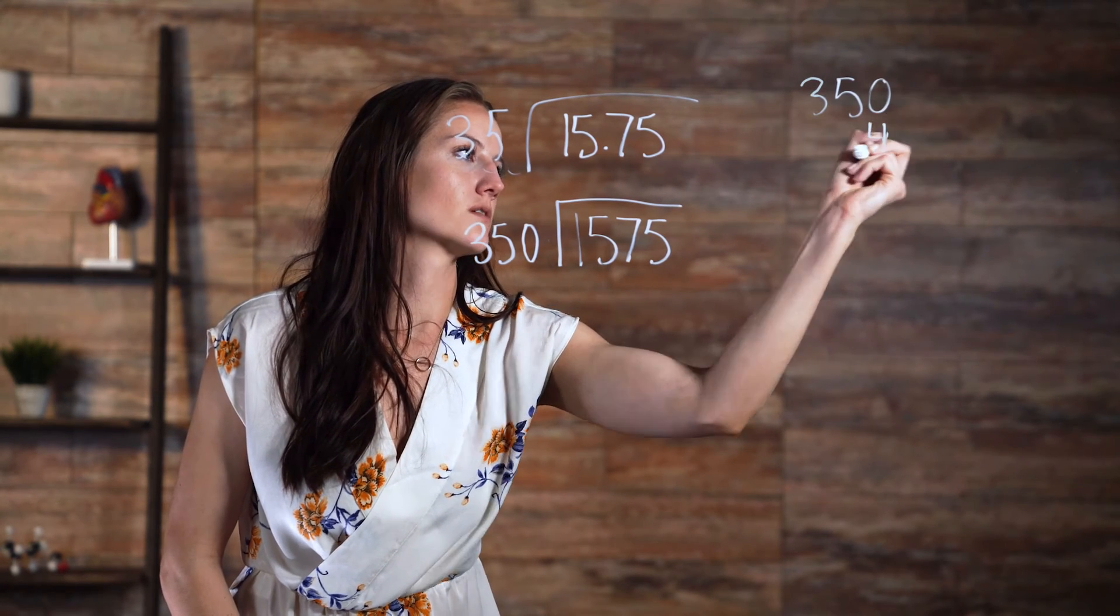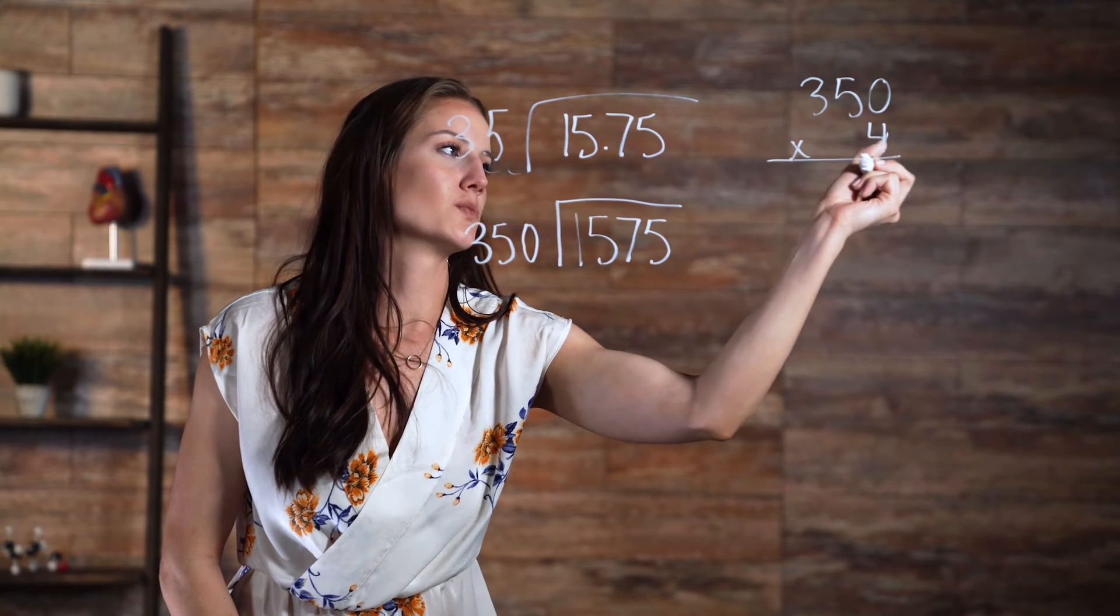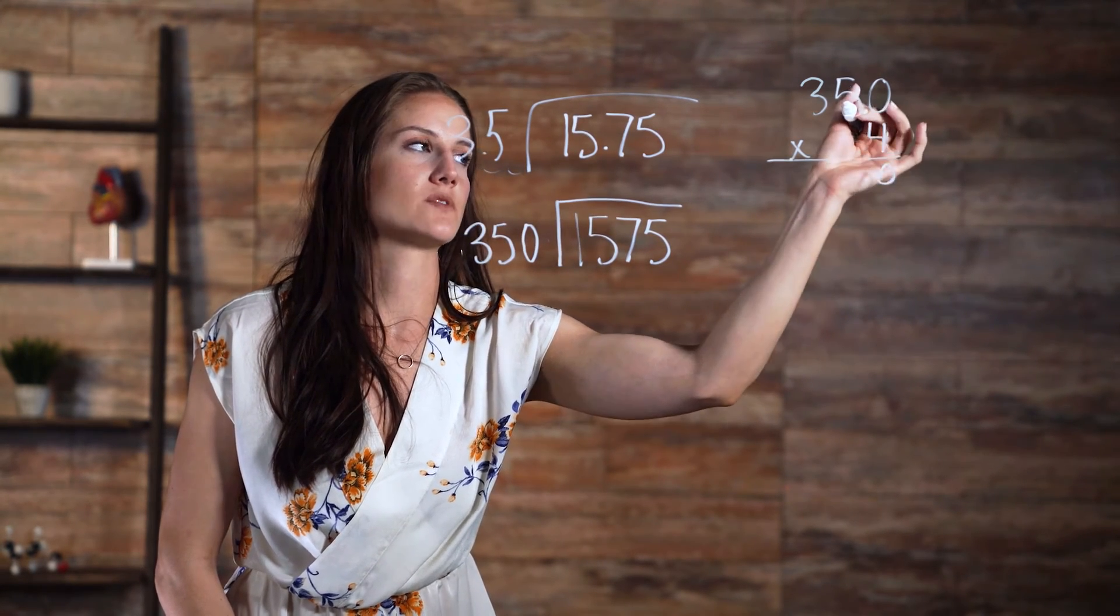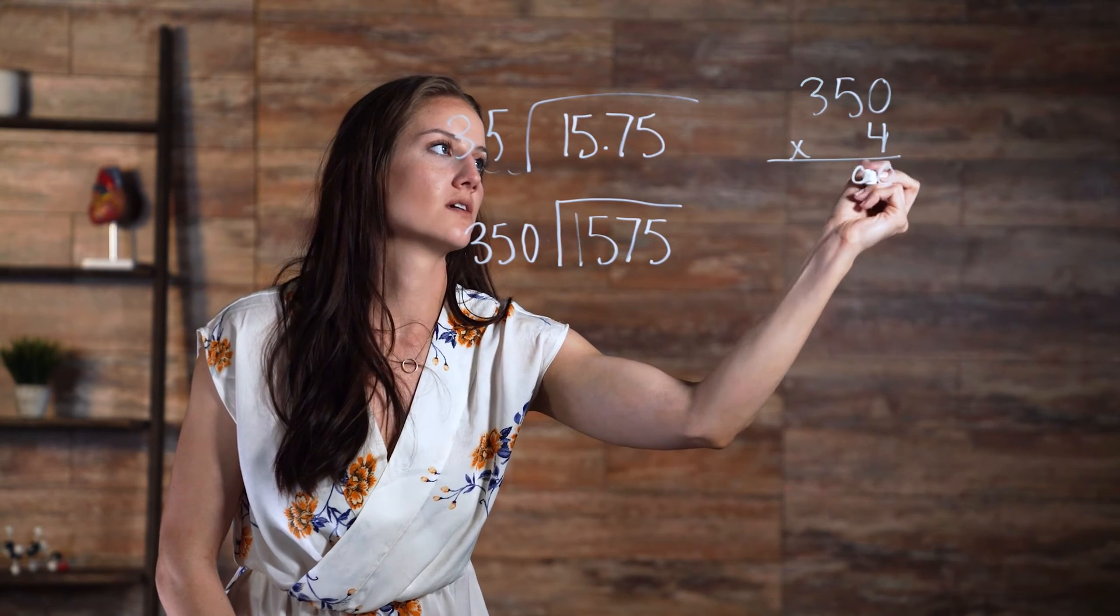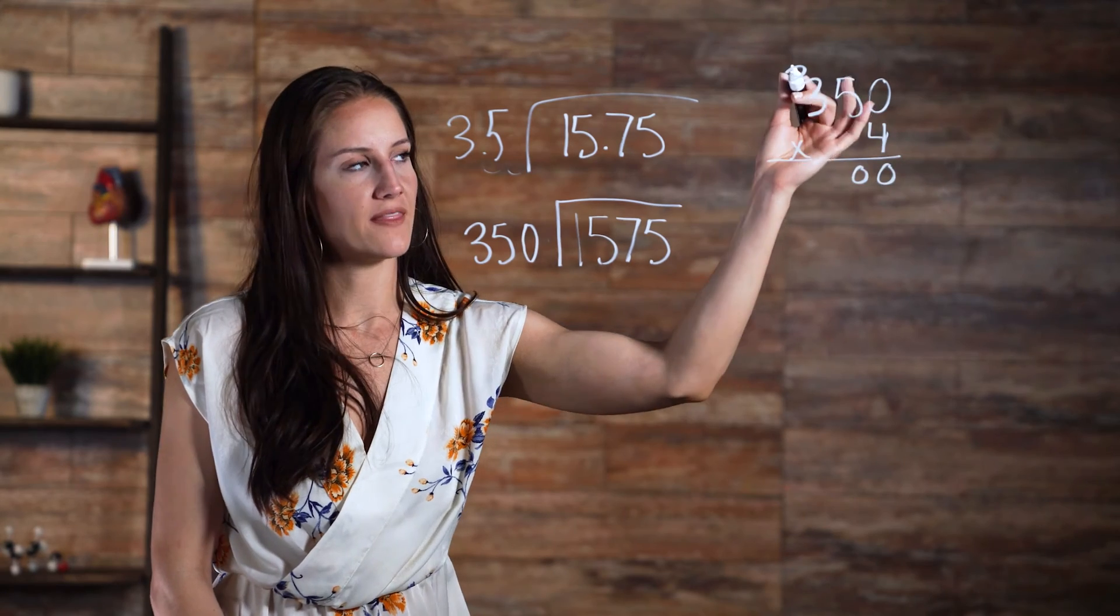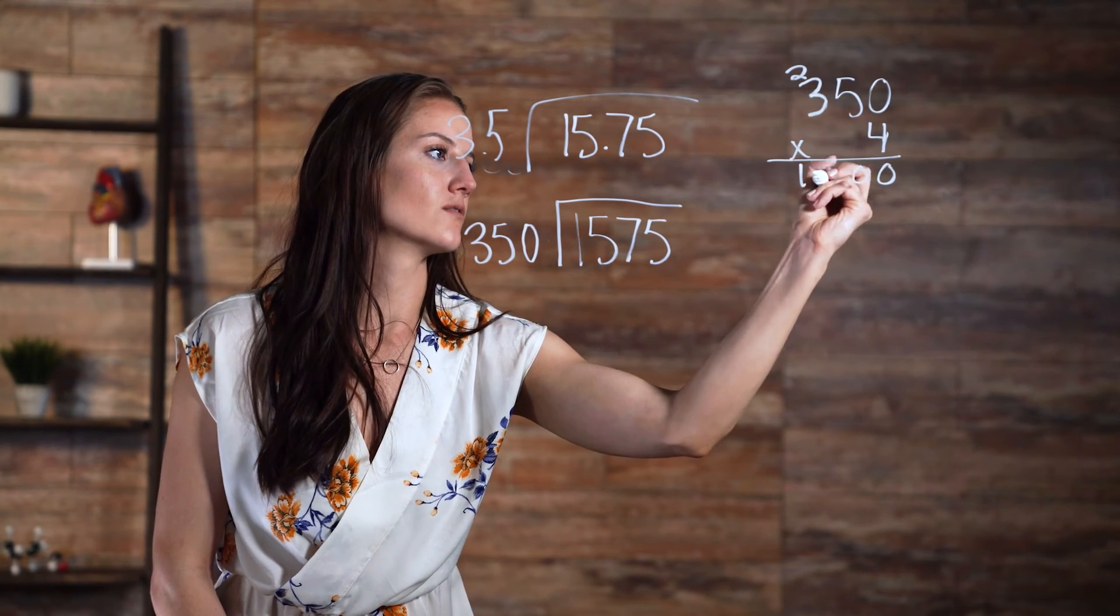350 times 4. So multiply 4 times 0, we get 0. Now we multiply 4 times 5 to get 20. So we carry the 2. 4 times 3 is 12, and then we add the 2, which gives us 14.